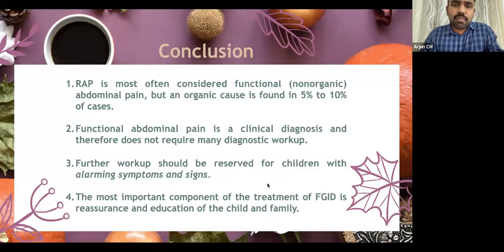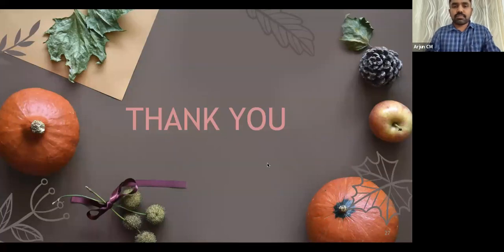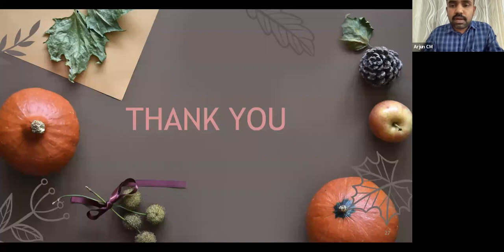To conclude: recurrent abdominal pain is most often functional abdominal pain, but an organic cause is found in 5–10% of cases. Functional abdominal pain is a clinical diagnosis and does not require extensive workup; if history and physical examination are unremarkable with no alarming signs, only a few basic investigations are needed. Further workup should be reserved for children with alarming symptoms and signs. The most important component of treatment of functional GI disorders is reassurance and education of the child and family. Feel free to ask if anyone has any questions.